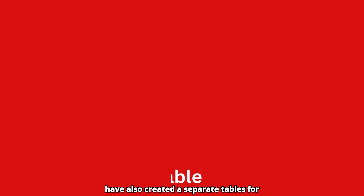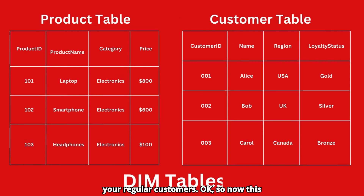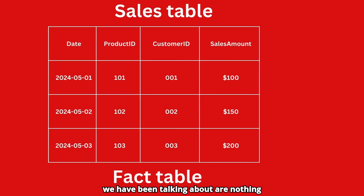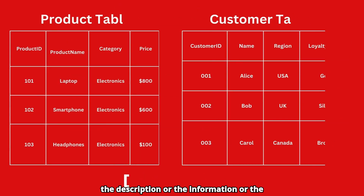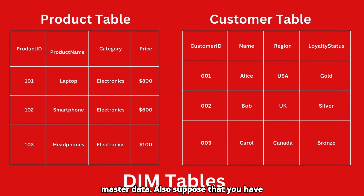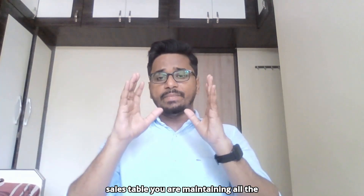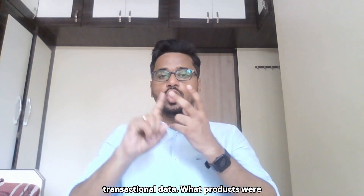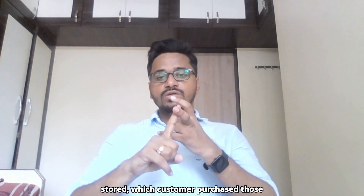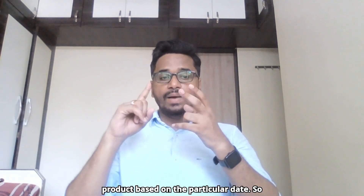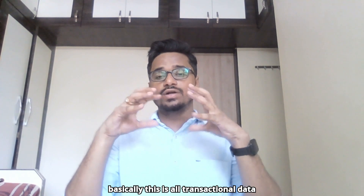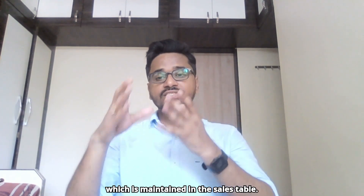You have also created a separate table for your regular customers. So this product table and the customer table are nothing but the dimension table, which contains all the description, information, or master data. Suppose you have also created a separate table called the sales table, and in that table you are maintaining all the transactional data — what products were sold, which customer purchased those products, and on what date.